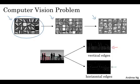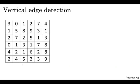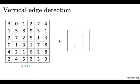So how do you detect edges in an image like this? Here is a six by six grayscale image. Because this is a grayscale image, this is just a six by six by one matrix rather than six by six by three, because they're on separate RGB channels. In order to detect vertical edges in this image, what you can do is construct a three by three matrix. In the terminology of convolutional neural networks, this is going to be called a filter.